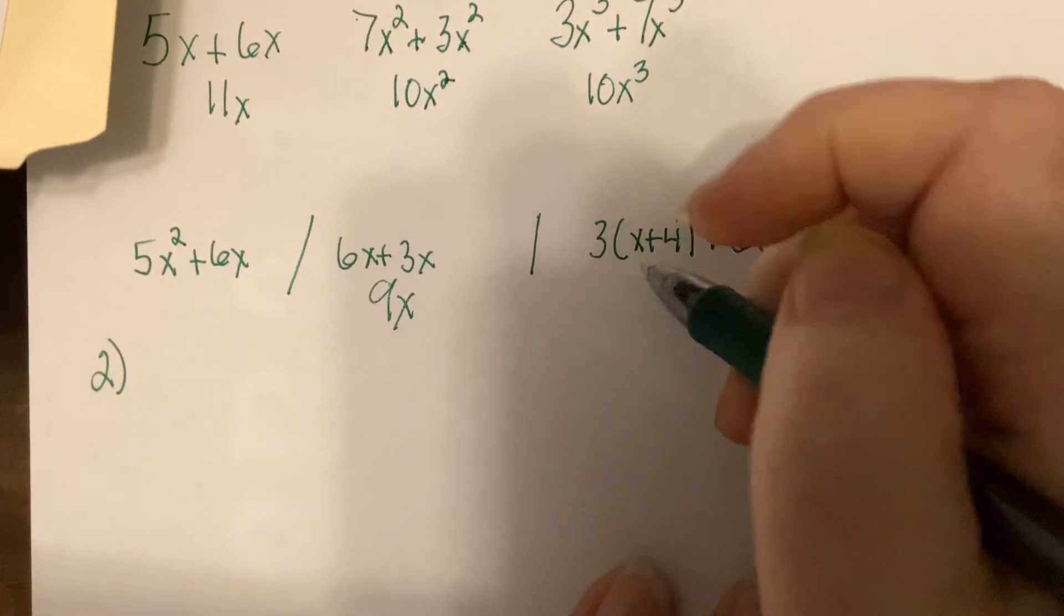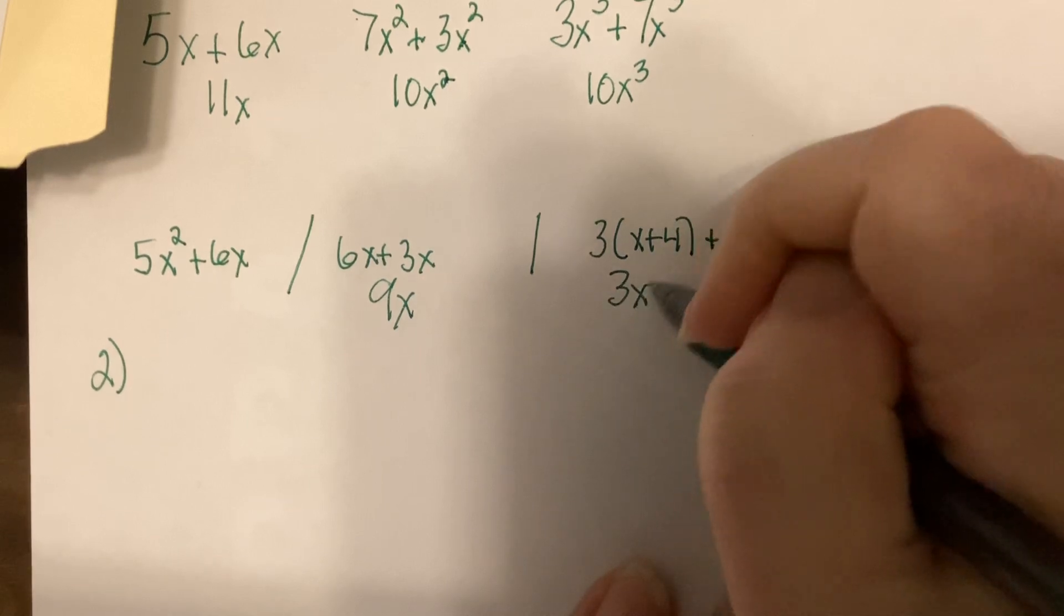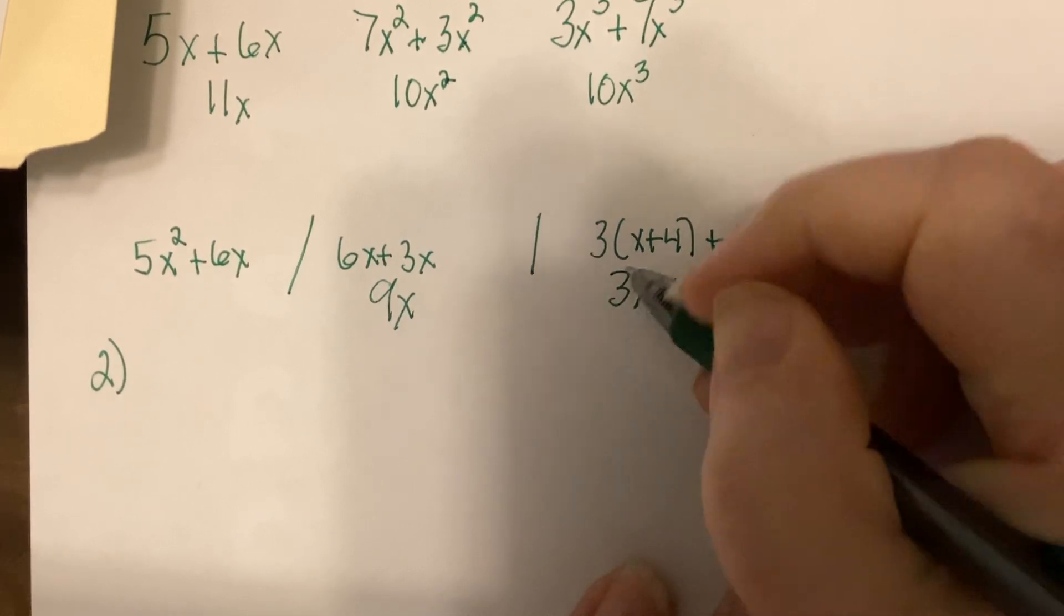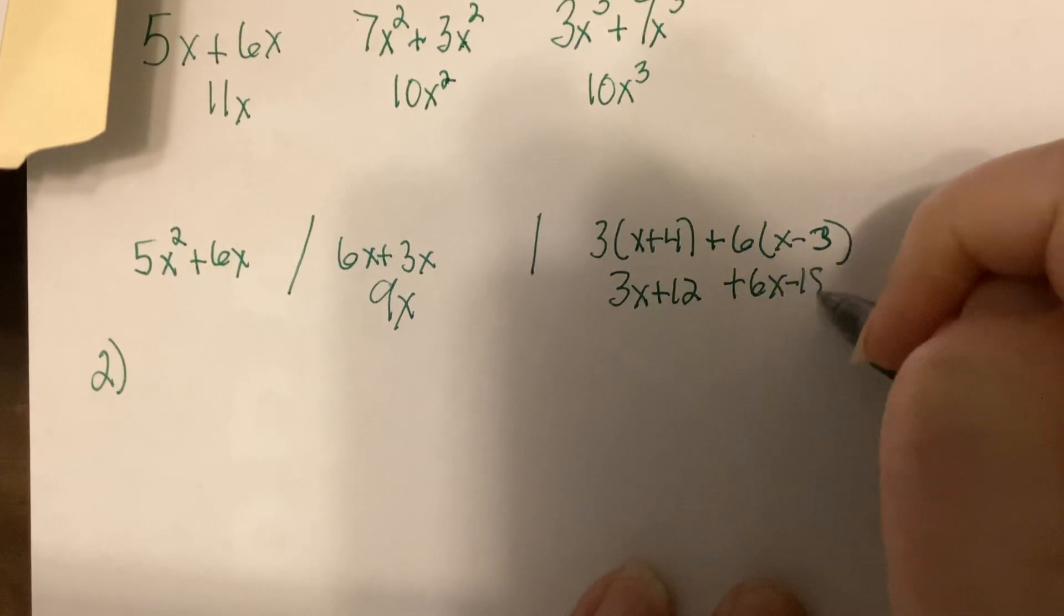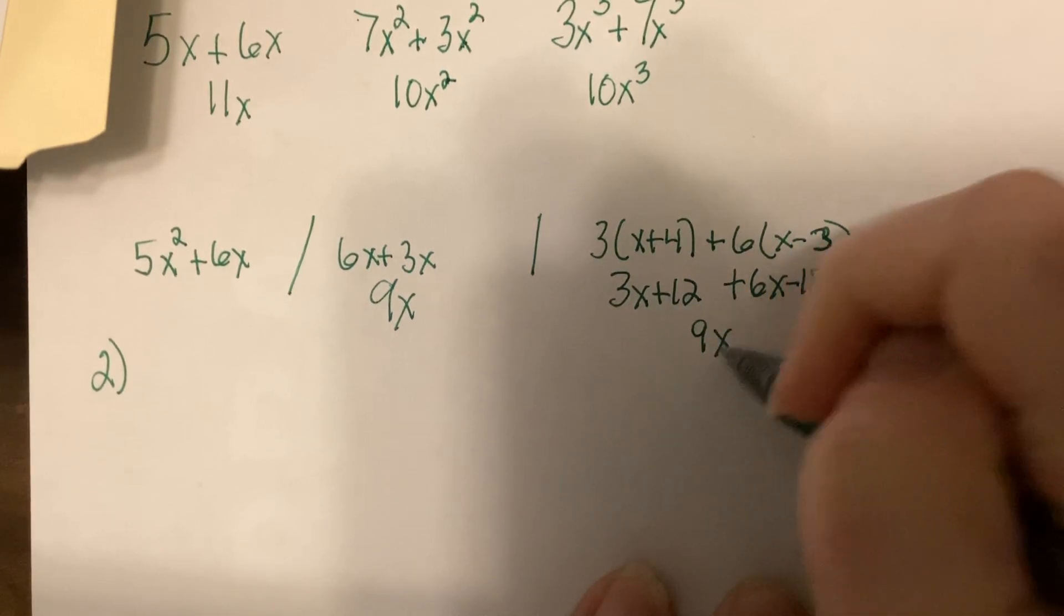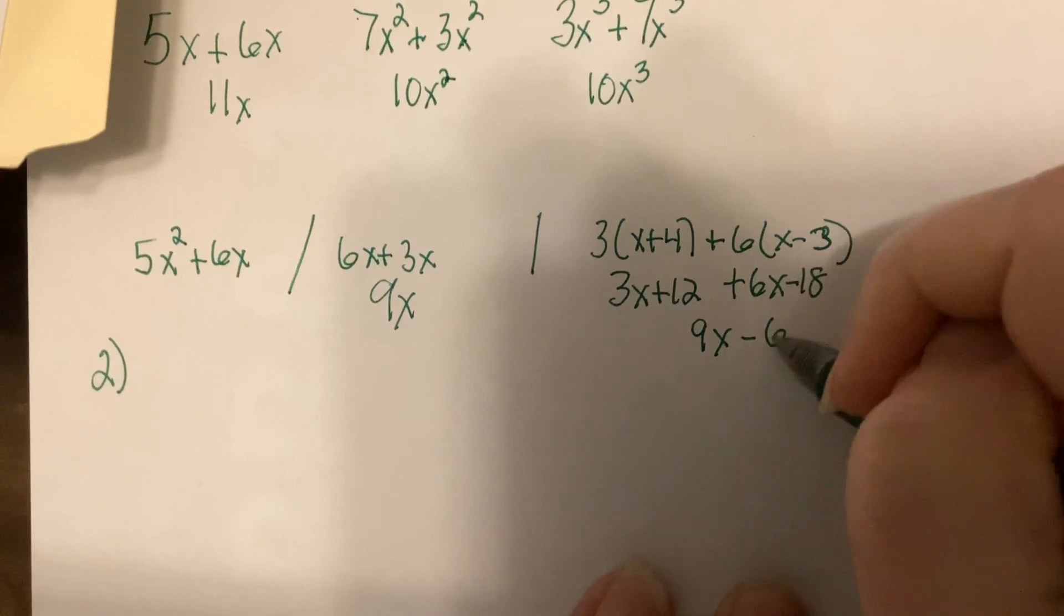Now, this is distribution. We've done this, my peeps. So it'd be 3X plus 12, 6X minus 18. So 9X minus 6.